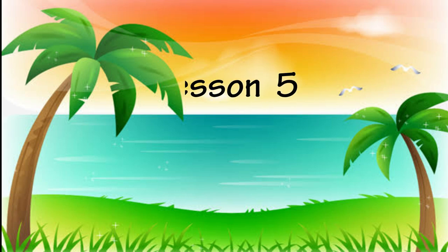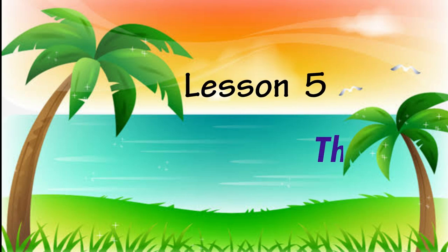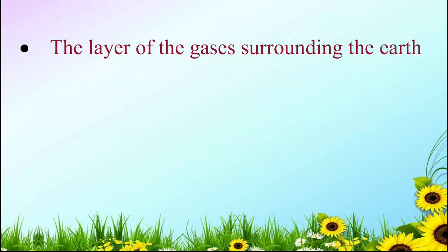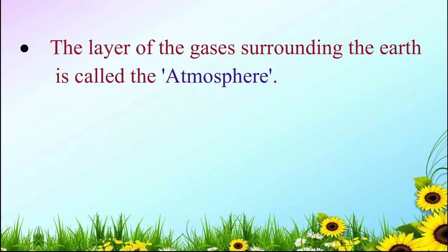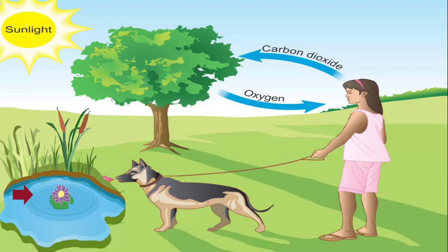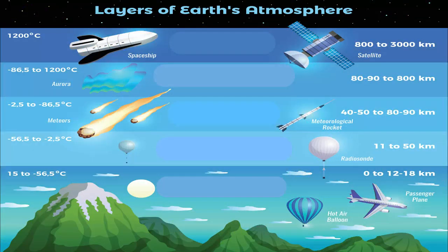Let us go through the key points of the lesson: the atmosphere. The layer of gases surrounding the earth is called the atmosphere. Earth is the only planet which has life, because earth has water, insulation, and an atmosphere with life-giving gases such as oxygen.